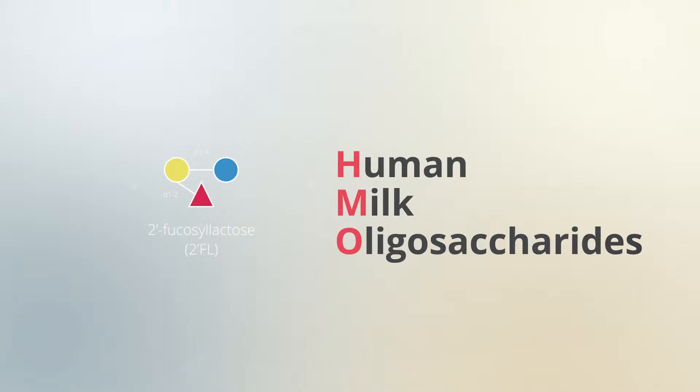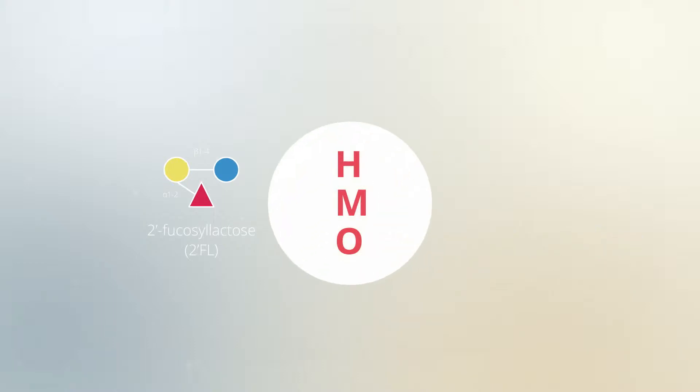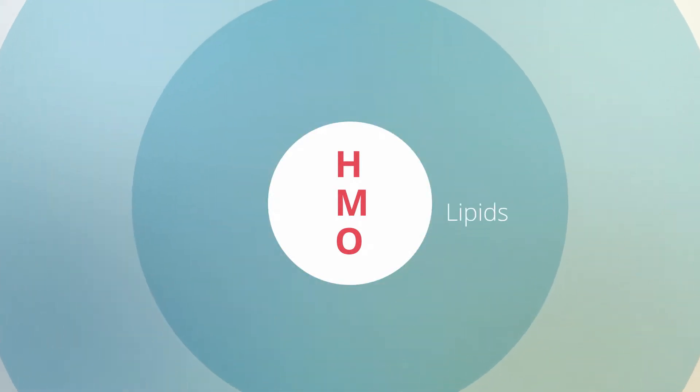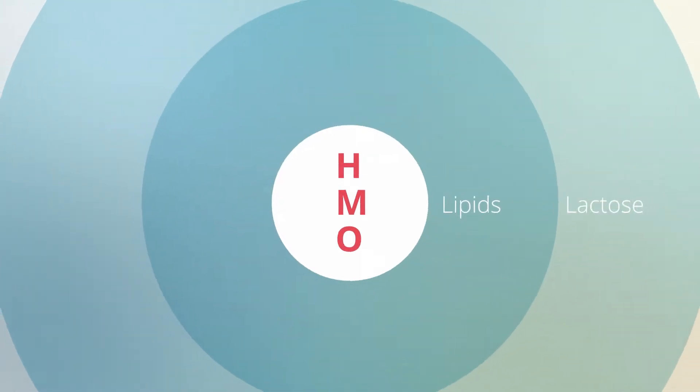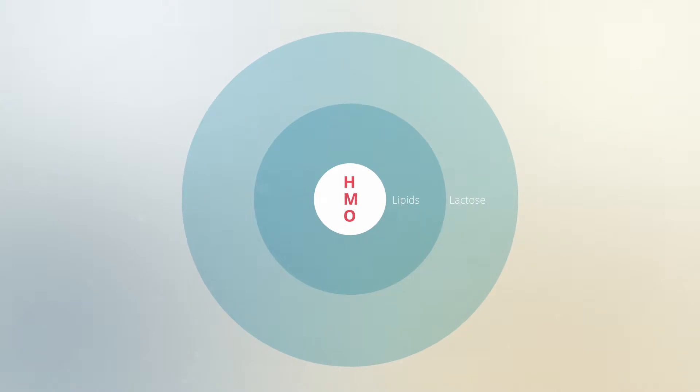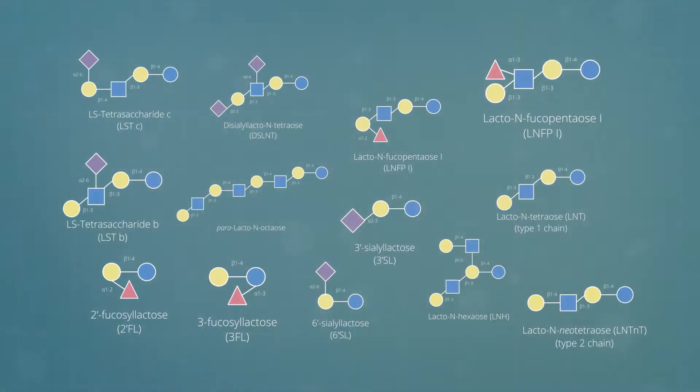Human milk oligosaccharides, HMOs, are diverse sugars, particularly abundant in mother's milk early in lactation. They are the third most abundant solid components in mother's milk, after lactose and lipids, and exist in various forms and structures.